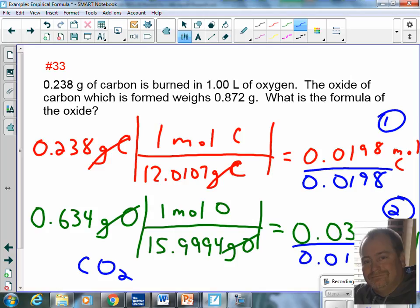Where did I get the 0.634? Okay, I took the total mass of the oxide, and I subtracted from it the 0.238. So the total mass of the oxide was 0.872. Carbon was 0.238 of that. So once I subtracted that, I got my 0.634. Any other questions for me?